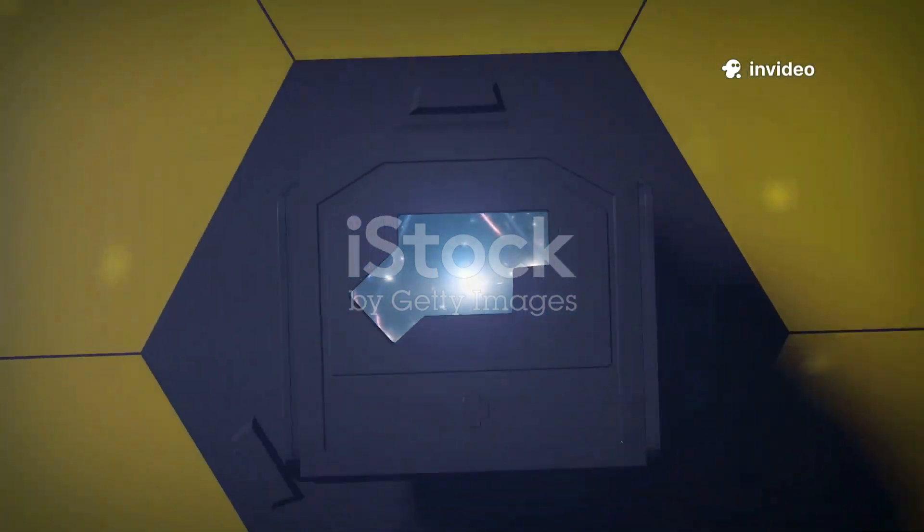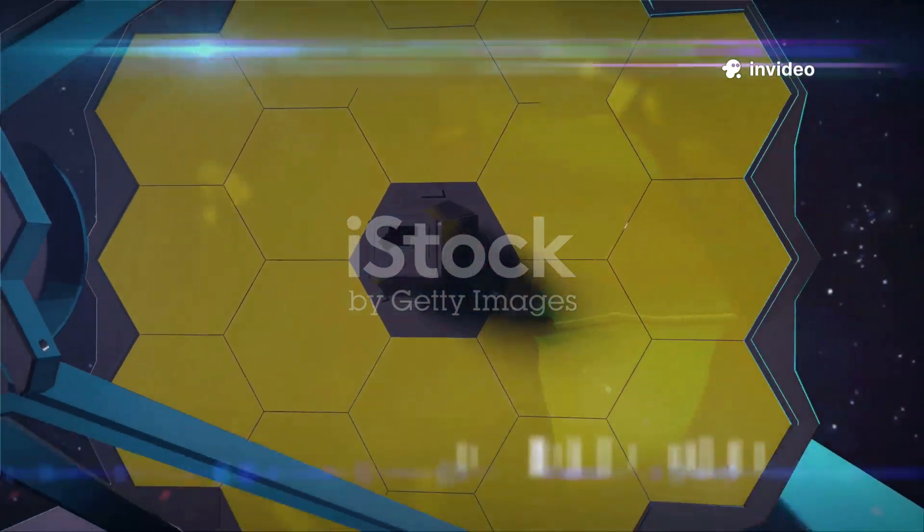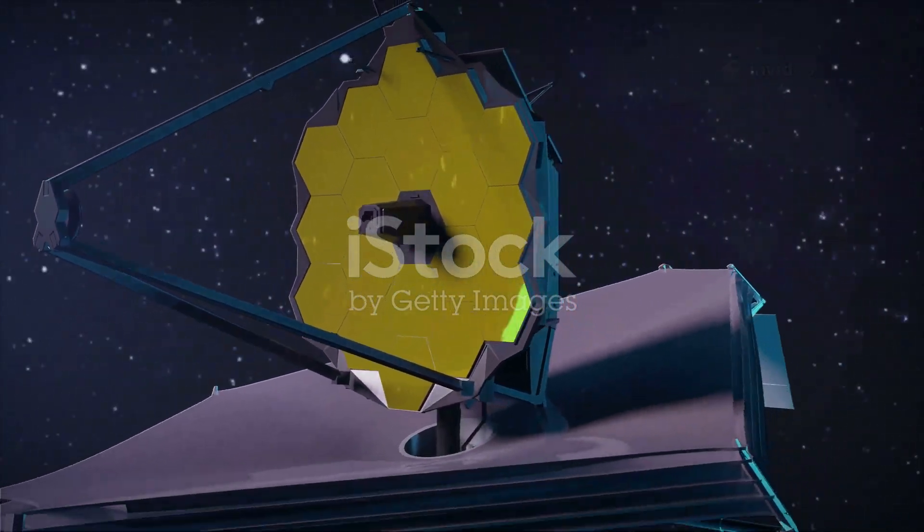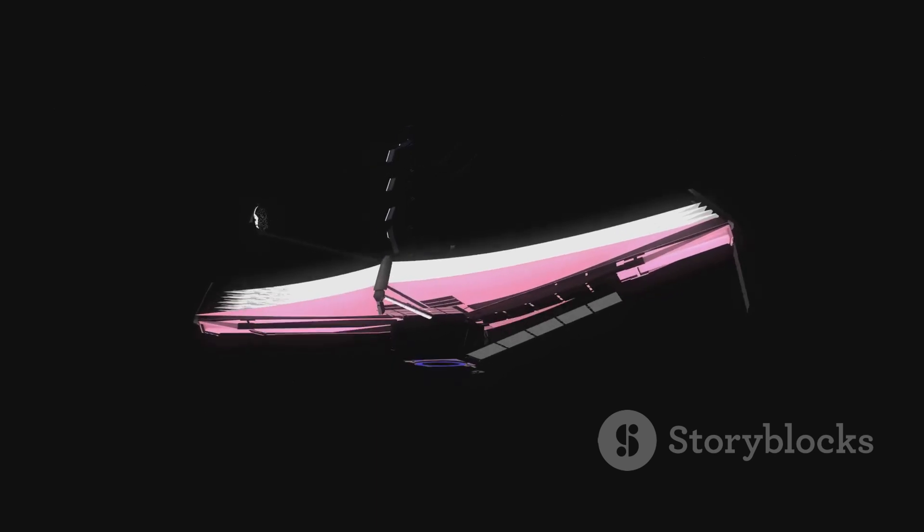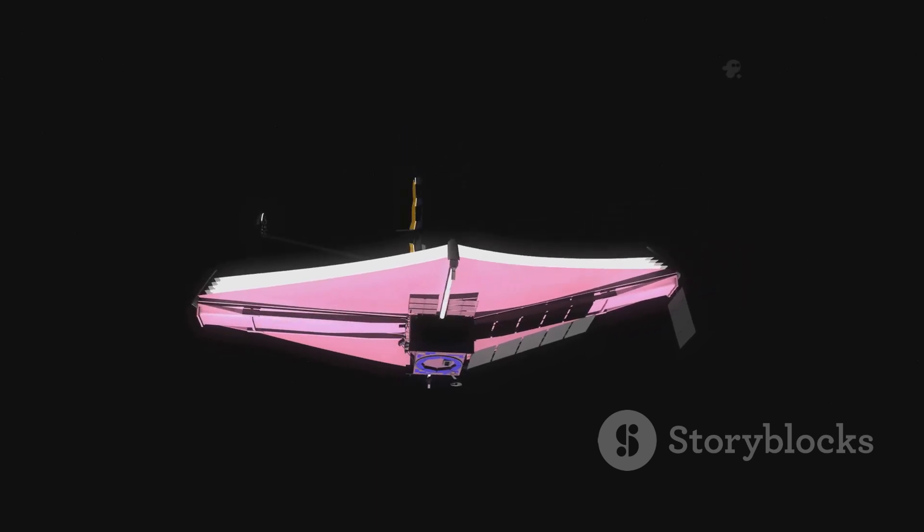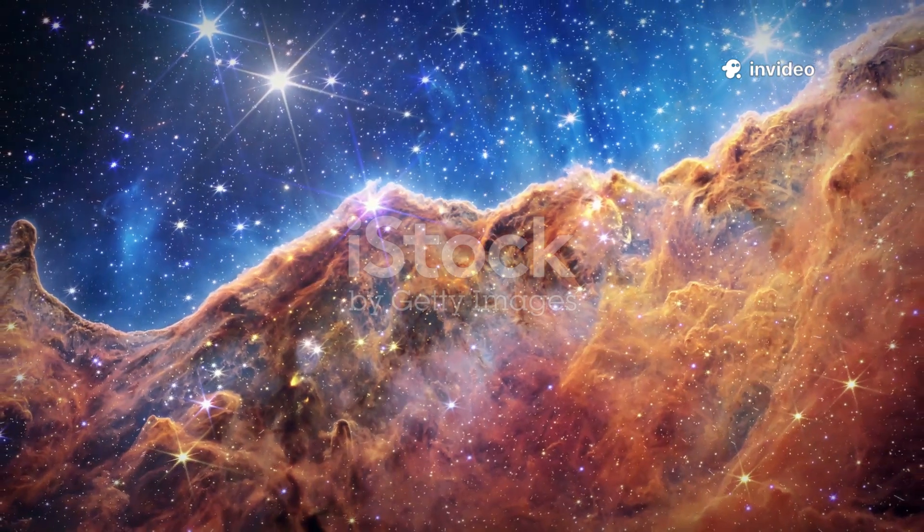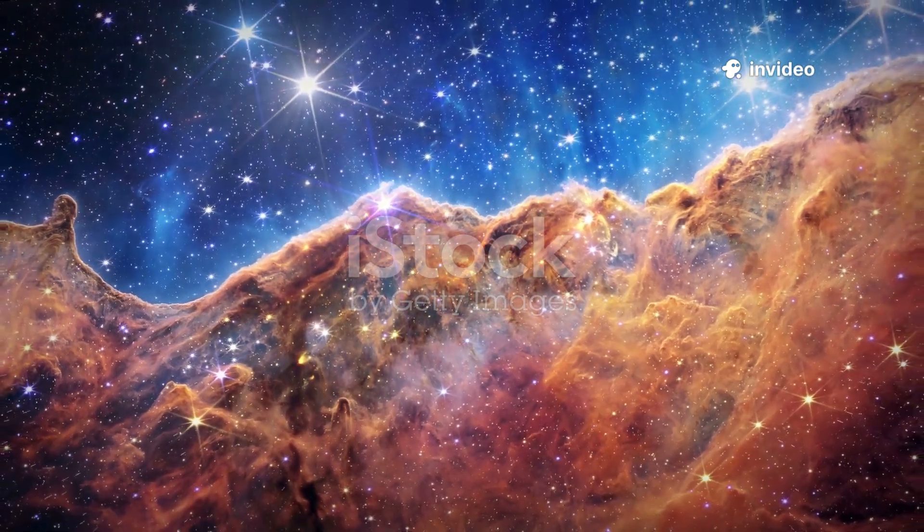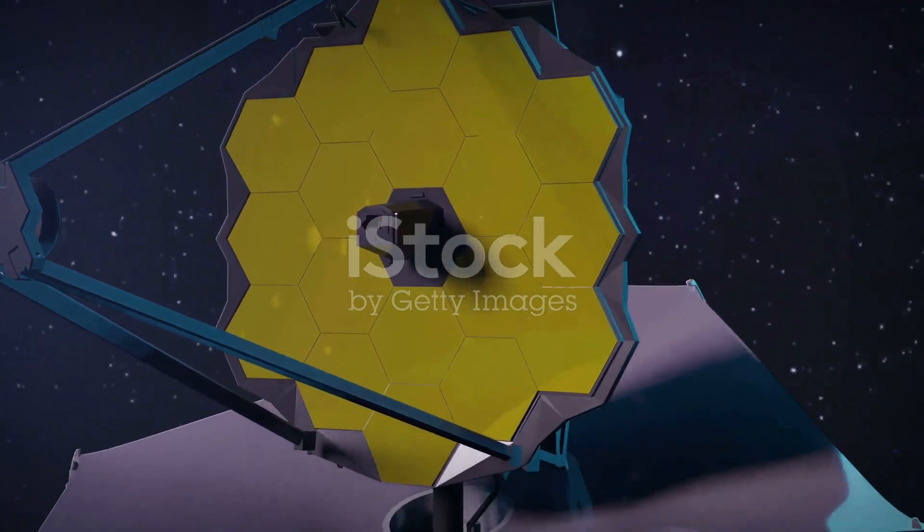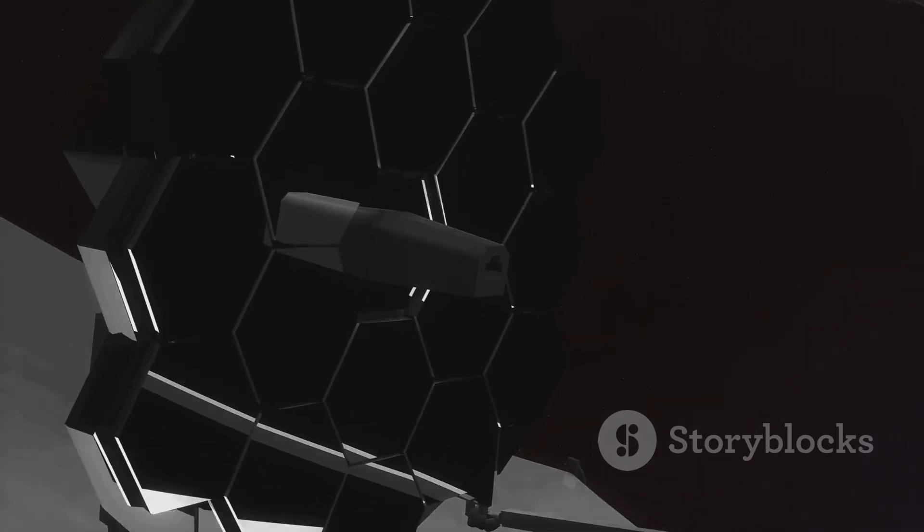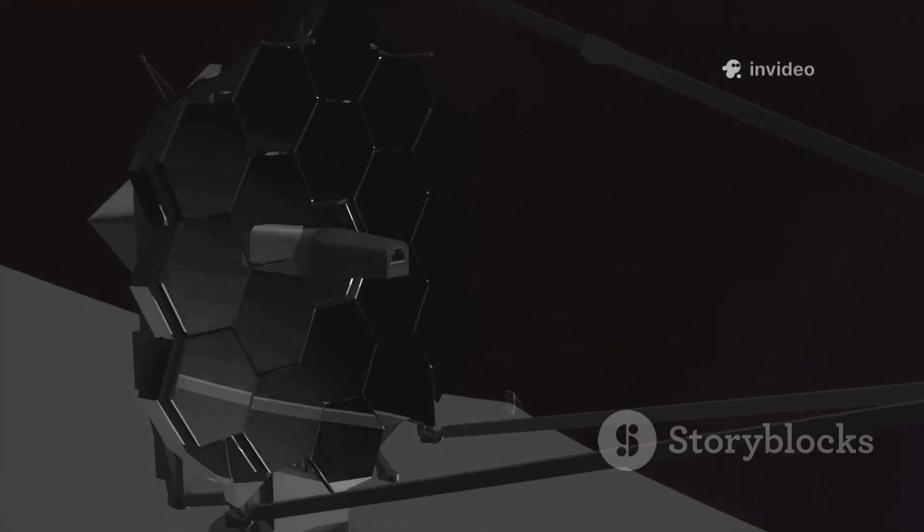Far from Earth, a golden eye has opened in the darkness, a million miles away. This is the James Webb Space Telescope, built to see what has never been seen before. It gathers ancient light from the farthest corners of the universe, sending back stories from before our world began. Its great mirror, made of 18 golden hexagons, is the largest ever sent into space.